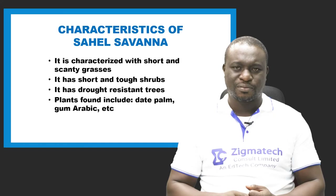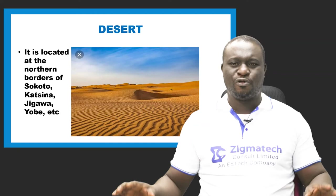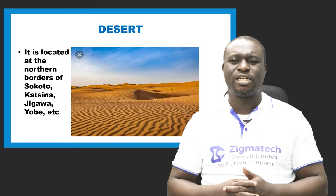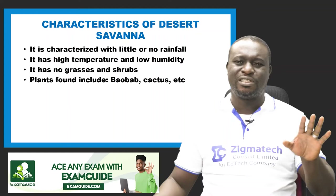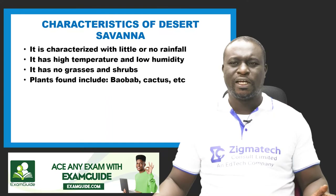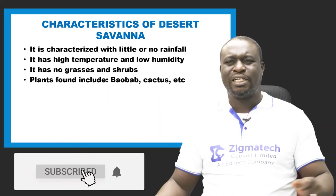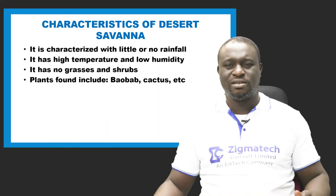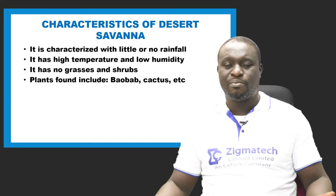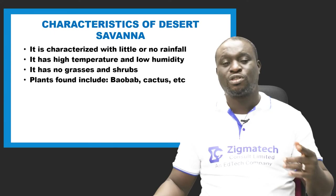Deserts in Nigeria are found mostly at the northern borders of Sokoto, Katsina, Jigawa, and Yobe states. Characteristics of deserts include little or no rainfall, high temperature, low relative humidity, and little or no grasses and shrubs. A plant found there is the cactus, and animals include snakes — mostly rattlesnakes.